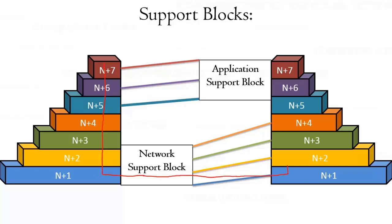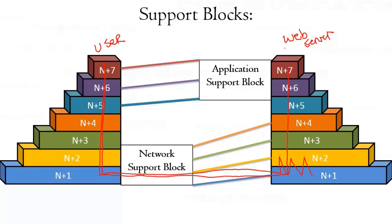Data travels down from the application layer all the way to the physical layer where it's transmitted over the network, potentially hitting switches and routers along the way, and then builds its way back up to the application layer on the receiving end. So if you're browsing and sending a request to a web server, it goes down all the layers, over the network through switches and routers, and then goes all the way back up to the web server's application layer.